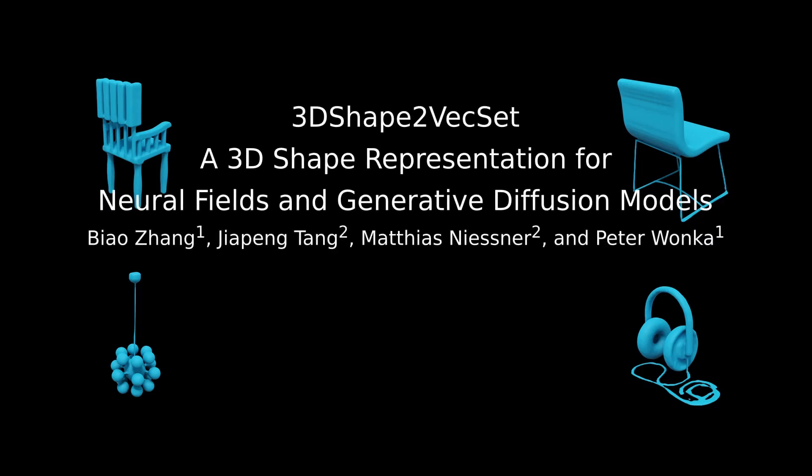We present 3D shape-to-vec set, a 3D shape representation for neural fields and generative diffusion models.